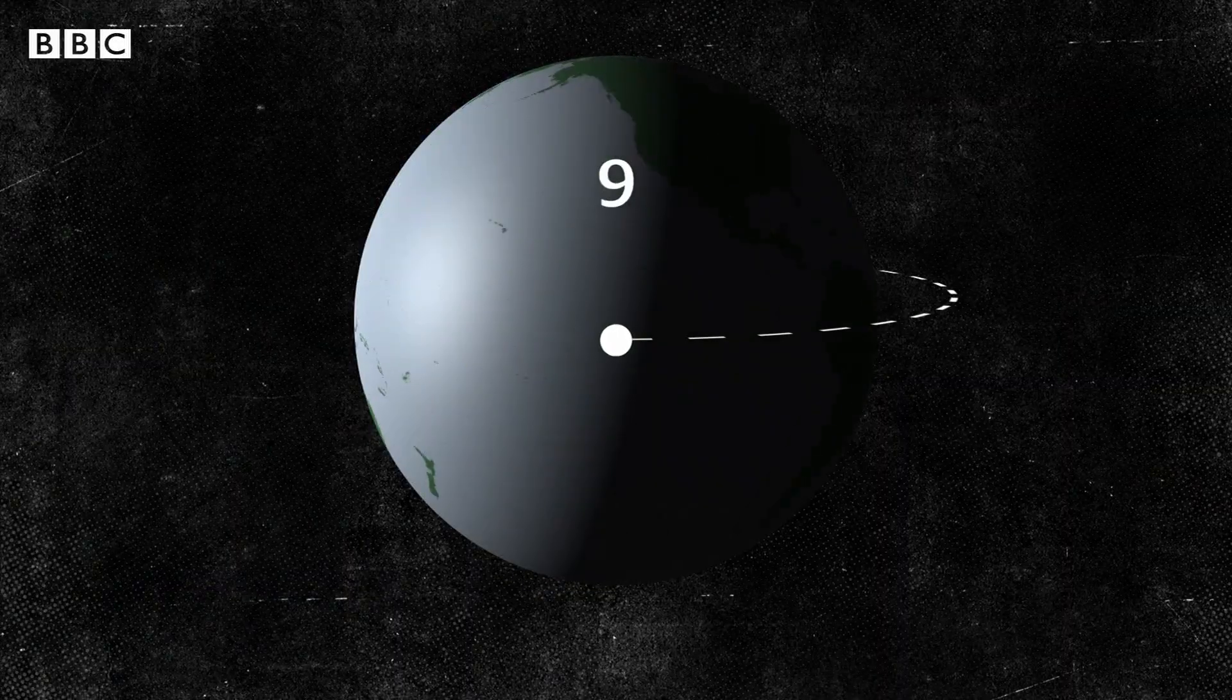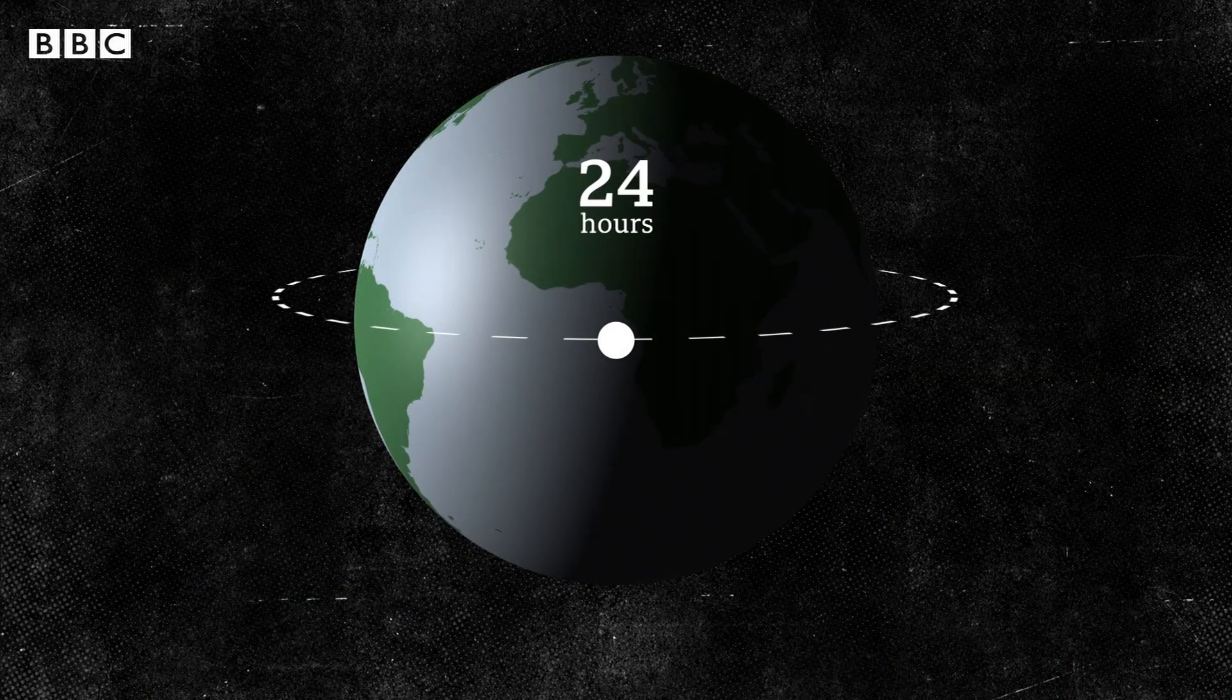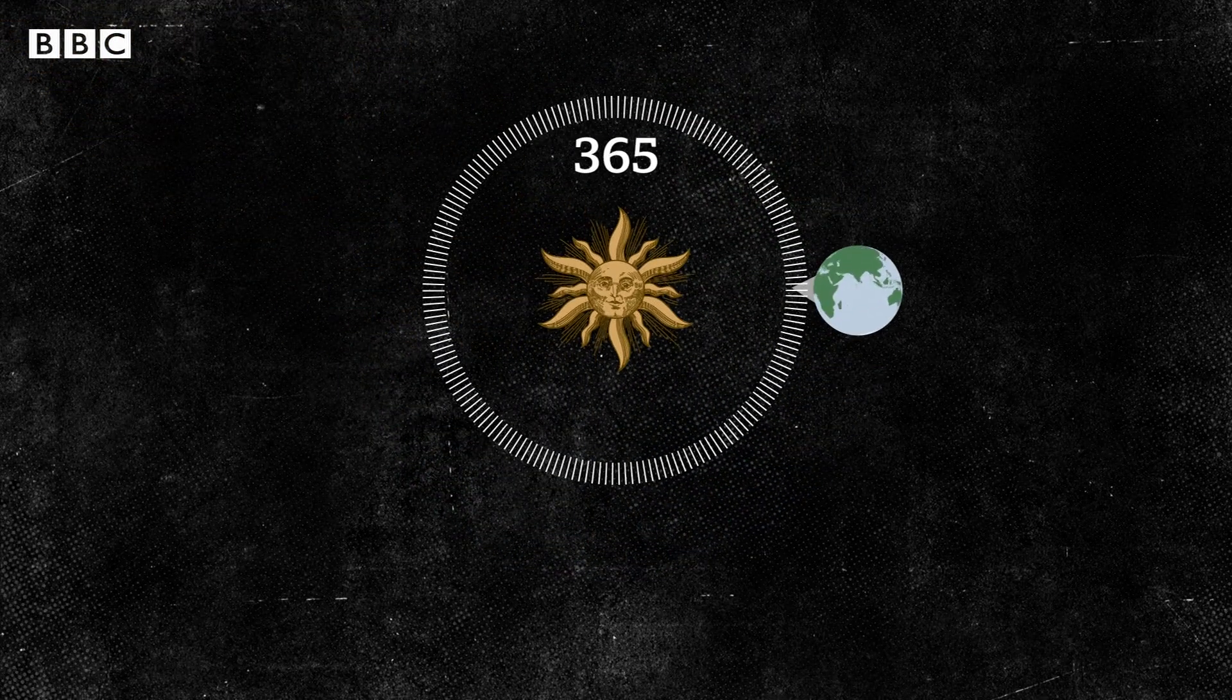We measure a day as how long it takes the Earth to spin once on its own axis. That's 24 hours. And we measure a calendar year as how long it takes the Earth to orbit the Sun. 365 days.